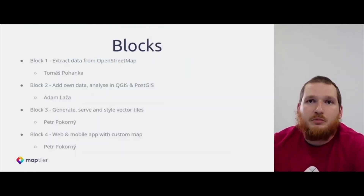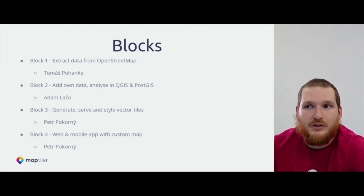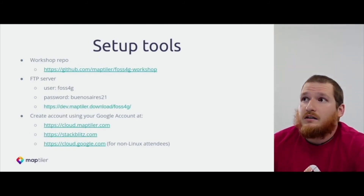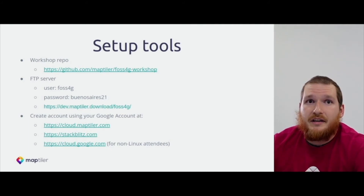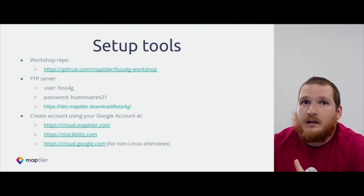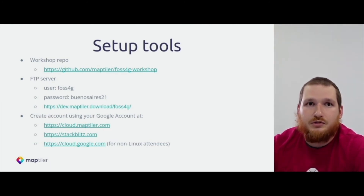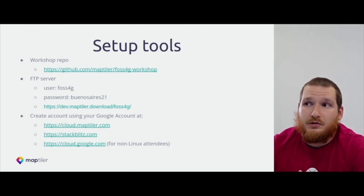About the workshop organization: it will be split into four blocks, and each of us will guide you through one block. Between the blocks there will be a few minutes break to refresh, catch up, and ask questions. We will start with block one about data from OpenStreetMap. We created a GitHub repo where you can find all source code, input data, and analysis results. There is also a readme file that describes the whole process step by step. We also have an FTP server with all input data, analysis results, and slides at dev.maptiler.download/foss4g. Log in as user 'foss4g' with password 'BuenosAires21'.